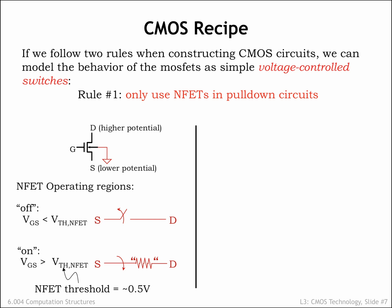That path has a resistance determined by the magnitude of VGS. The larger VGS, the lower the effective resistance of the switch and the more current that will flow from drain to source. When designing pull-down circuits of NFET switches, we can use the following simple mental model for each NFET switch: if the gate voltage is a digital 0, the switch will be off; if the gate voltage is a digital 1, the switch will be on.